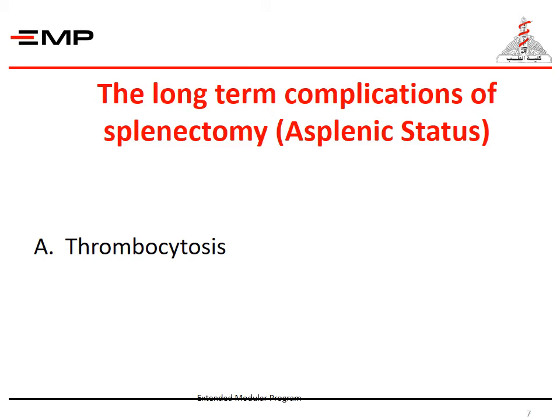Thrombocytosis occurs within a few days after total splenectomy and may reach high levels with the risk of portal vein thrombosis or thrombus formation elsewhere. Aspirin is given when the platelet count exceeds 500,000 per cubic millimeter.